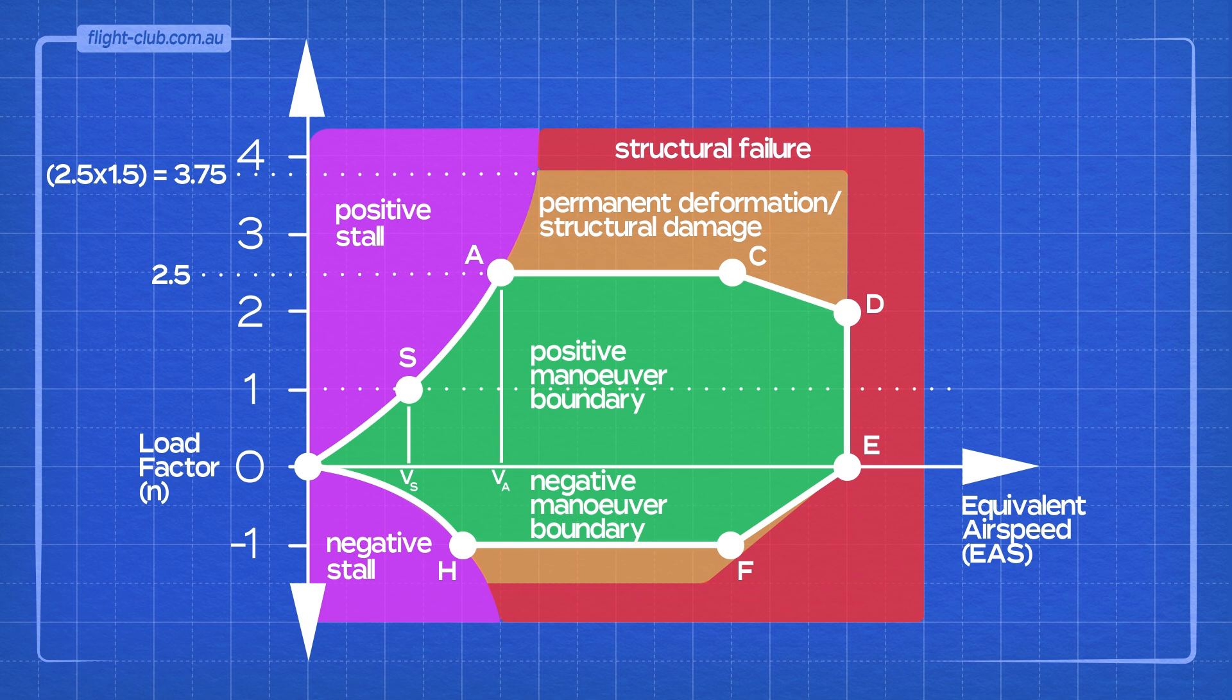The airplane can fly in speed range of lines CD and FE. However, the higher aerodynamic loads, due to the higher speeds, require a reduction in the maximum permissible load factor. This speed range should be flown with caution.